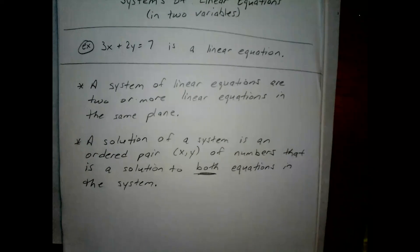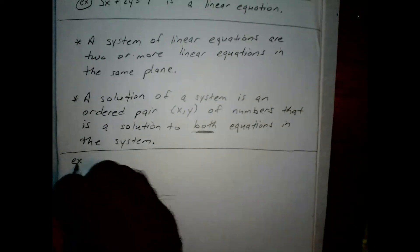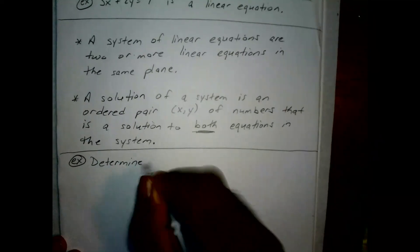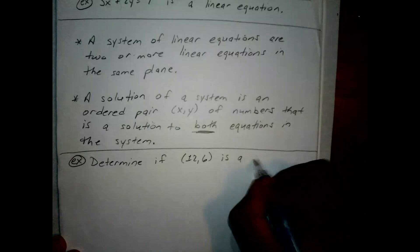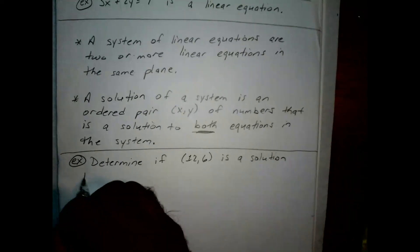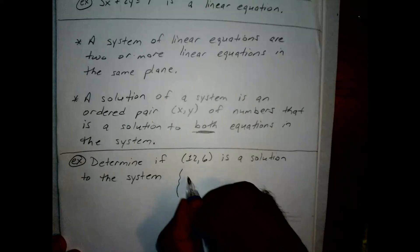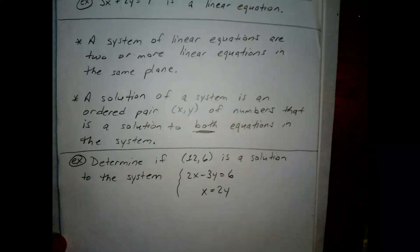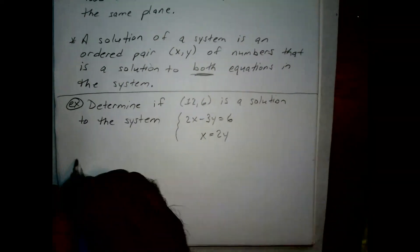Let's do a quick example. If you're moving too quickly, pause the video, finish writing it out, and then move on. We want to determine if the ordered pair (12, 6) is a solution to the system. The two linear equations are 2x minus 3y equals 6 and x equals 2y.